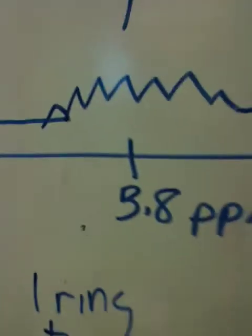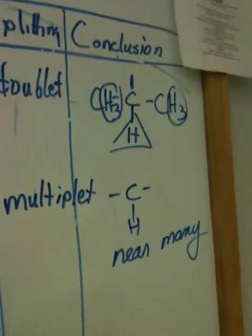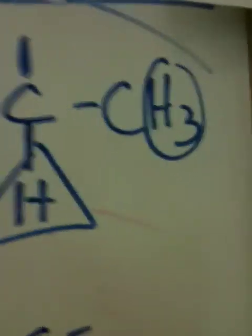The next peak in the spectrum is the multiplet at about 3.8 parts per million with an area of 1. Don't over-interpret the splitting — just write 'multiplet.' This is one hydrogen near many. This is the hydrogen that was implied through the splitting of the 1 ppm peak, so this fragment is really just verification that we do indeed have the isopropyl group.